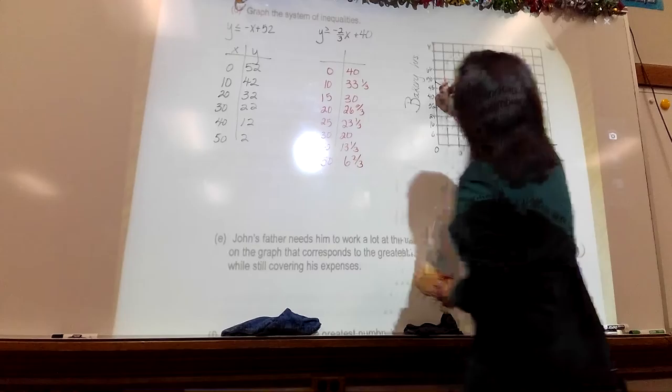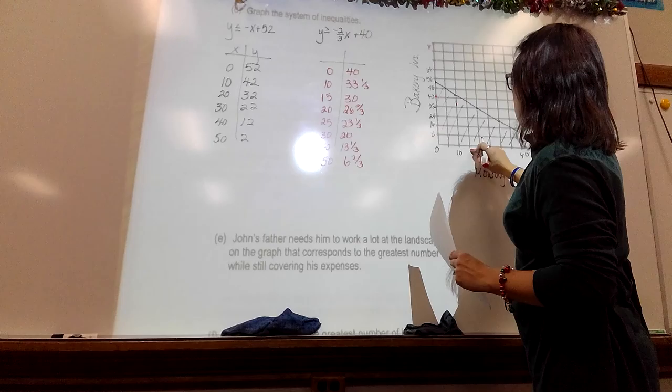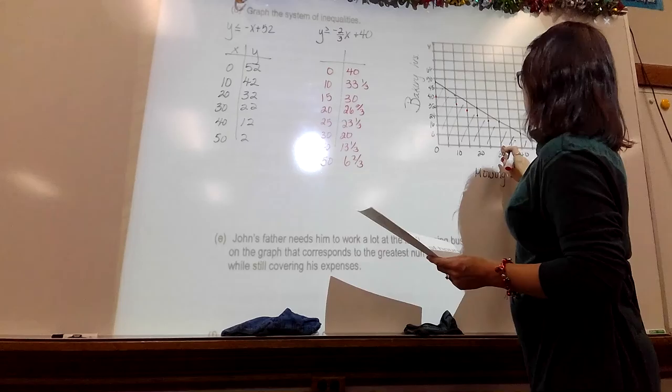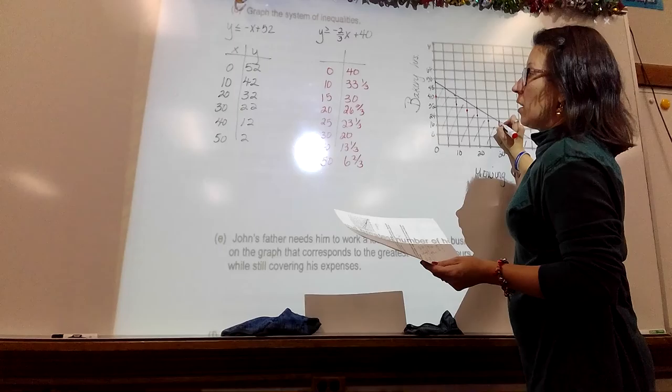That's probably Mrs. Castricone. She's going to have to say, wait a minute, 0 to 40, 10 is 33 and 1 third, 15 is 30, 20 is 26 and 1 third, 25 is 23 and 1 third, 30 is 20.